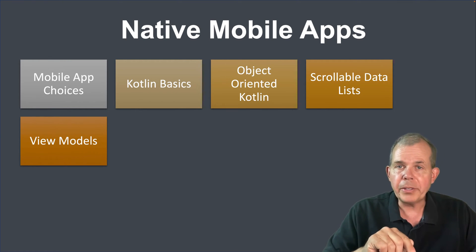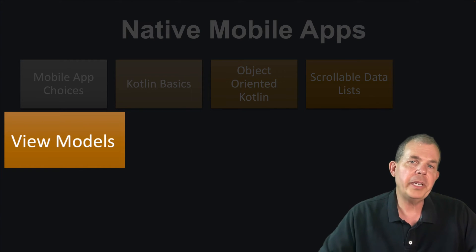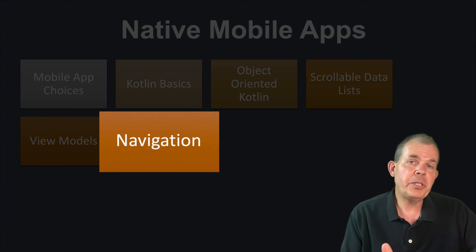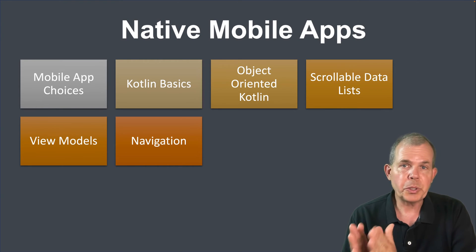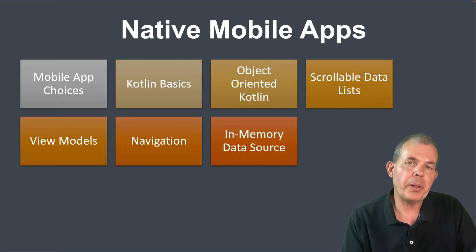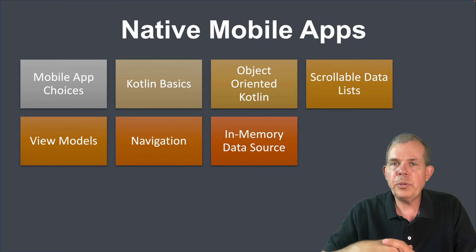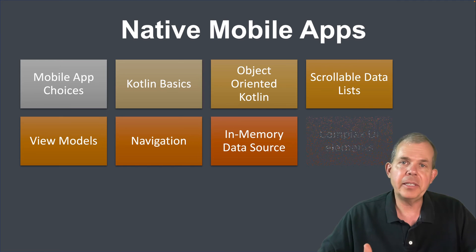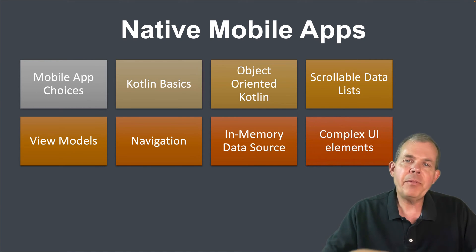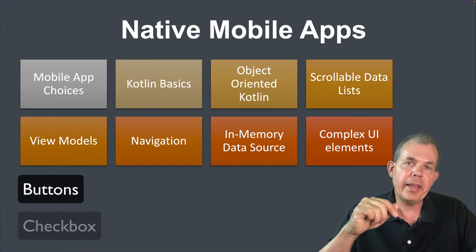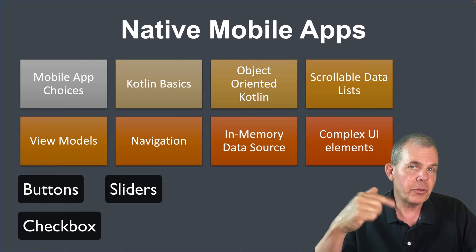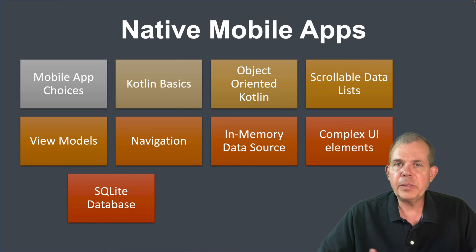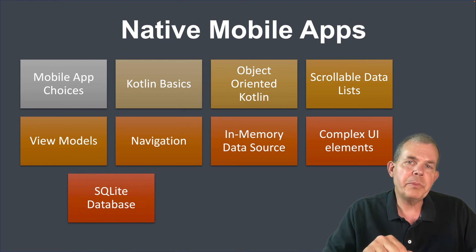The next activity will introduce view models, which is a nice way to handle data that is displayed behind the screens and cluster it together into a nice package. We're going to work with navigation so you can have multiple pages or screens in your app and navigate between them nicely. We'll build a simple app around that, and then we're going to start storing data — the first version will be in-memory, just a list that disappears when you close the app, but it's simple. Then we'll introduce more complex UI elements like check marks, sliders, and drop-down boxes — all the elements you'd normally have in a typical user interface.